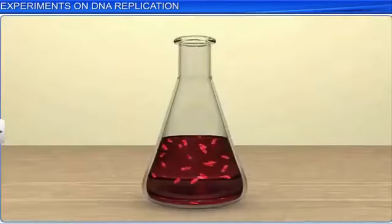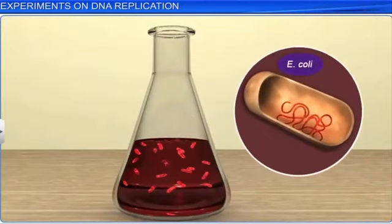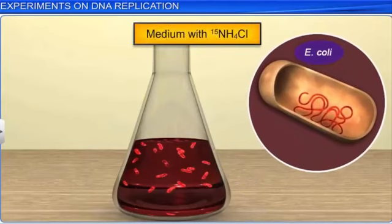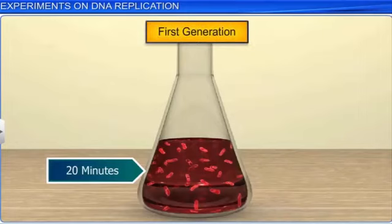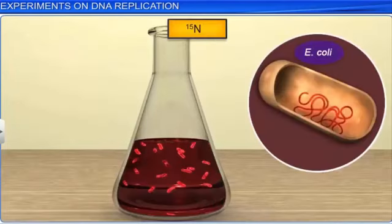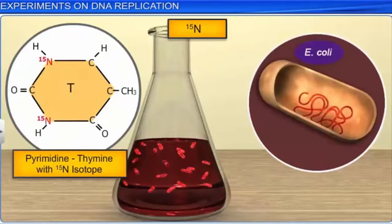Meselson and Stahl grew E. coli in a medium that had NH₄Cl with the ¹⁵N isotope as the only nitrogen source. ¹⁵N isotope is a heavy isotope of nitrogen, but it is not radioactive. Many generations of E. coli were bred in the same medium, which was not too hard to achieve, since a new E. coli generation arrived every 20 minutes. As a result, newly synthesized DNA had the ¹⁵N isotope as a constituent of purines and pyrimidines.